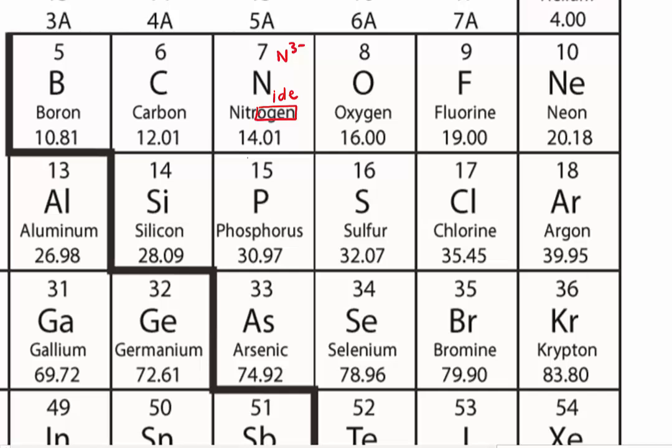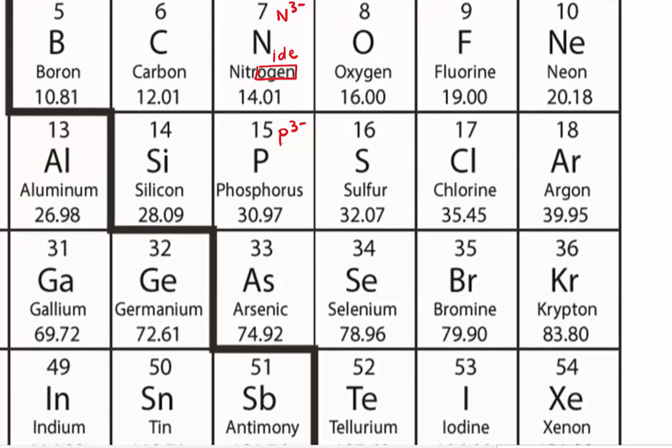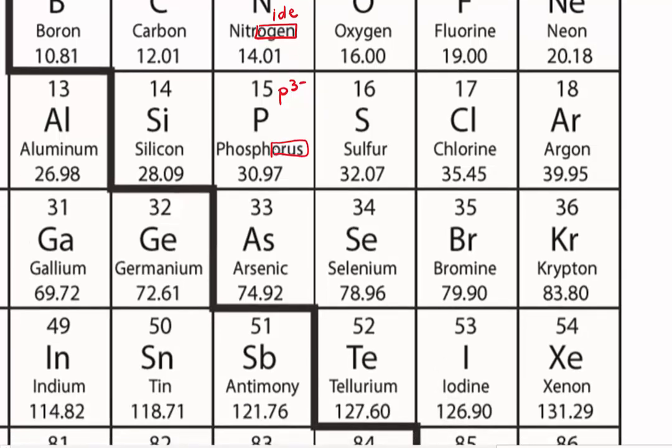Then we go to phosphorus, which will form a P3 minus ion. So again, this is the formula for the ion. So what's the ending for phosphorus? It turns out to be O-R-U-S. And we add ide. So we have phosphide.